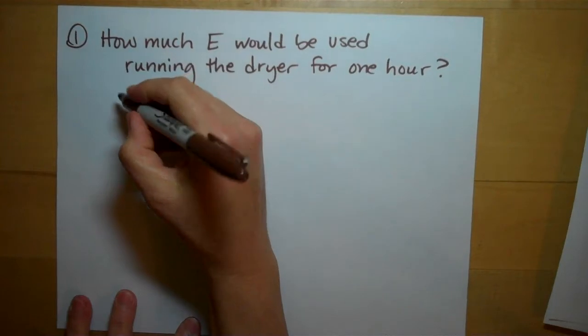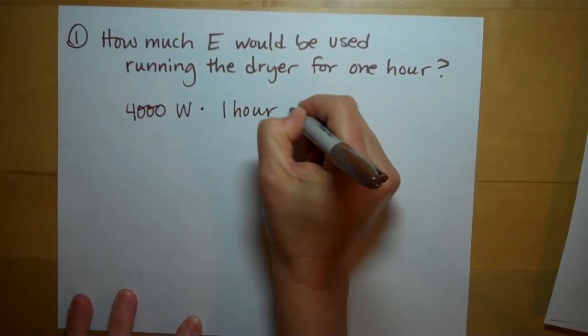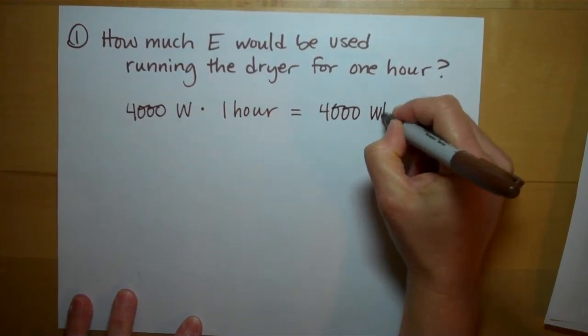So if the dryer's using 4,000 watts of power, you run it for one hour, you've used 4,000 watt-hours.